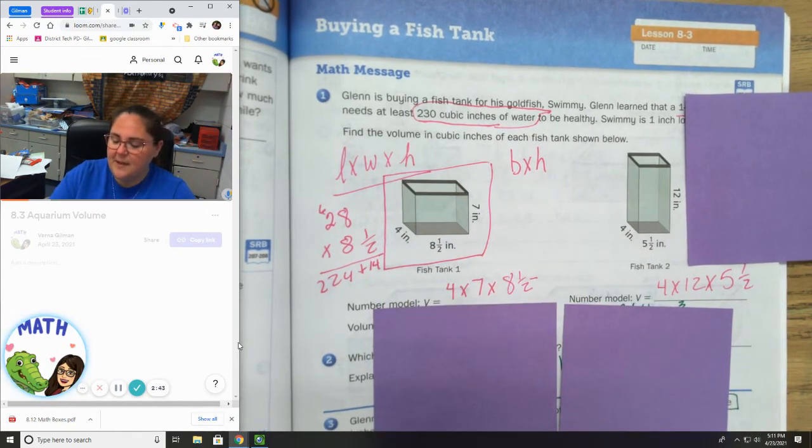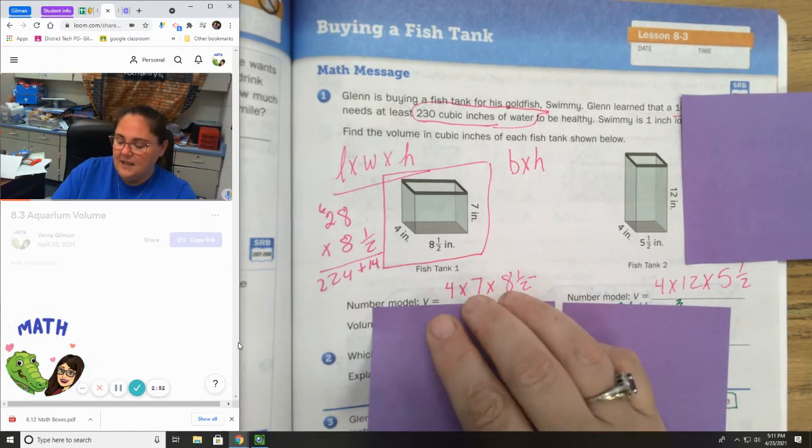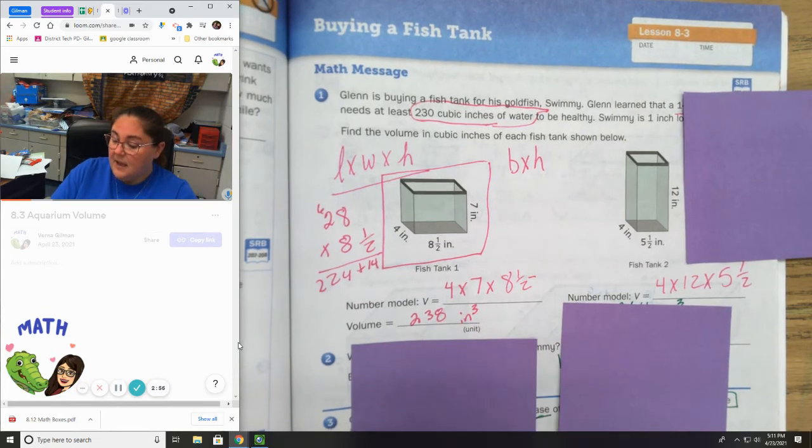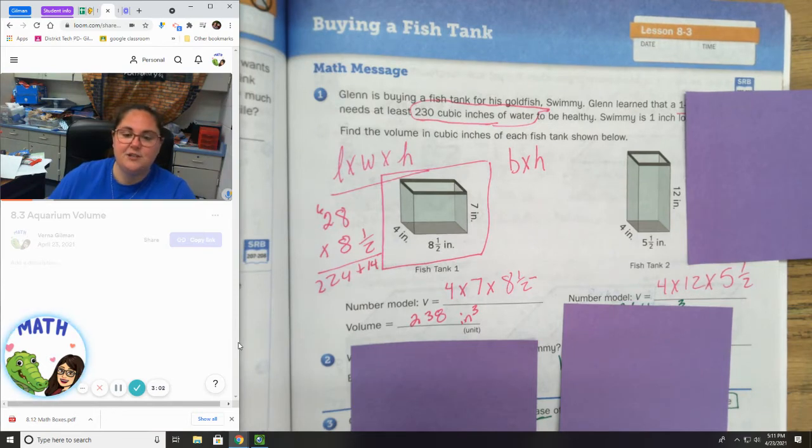And then I'm going to multiply by half. 28 times 1 half is 14. So, 224 plus 14 is 238. And this is inches cubed. 238 inches cubed. Great.